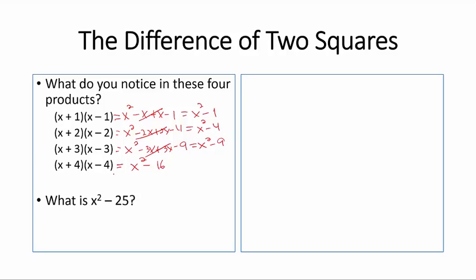So what is x squared minus 25? Well, it must factor as (x + 5)(x - 5), which you can readily verify.